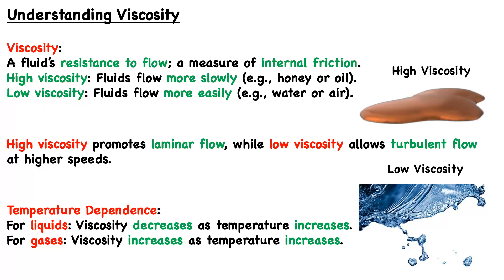Low viscosity fluids, oppositely, flow more easily. Common examples include water as a liquid and air as a gas. High viscosity promotes laminar flow, while low viscosity promotes turbulent flow at higher speeds. If viscosity is essentially resistance and high viscosity means more internal friction, then this brings things under control — it can't reach as high speeds, and there's less chaos.